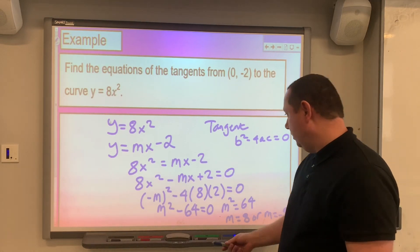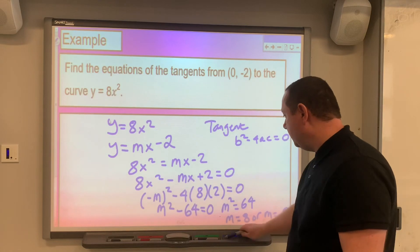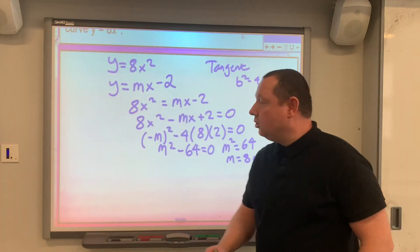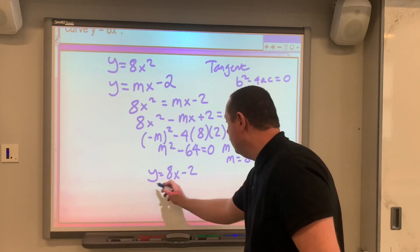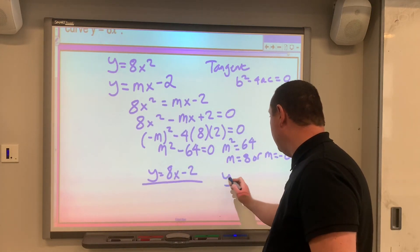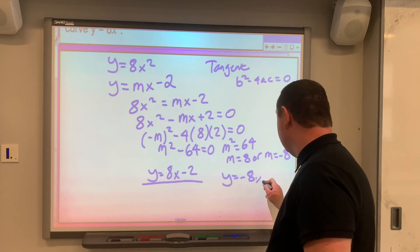So we've got two equations for tangent. So our first equation is y equals 8x minus 2, and our second equation is y equals minus 8x minus 2.